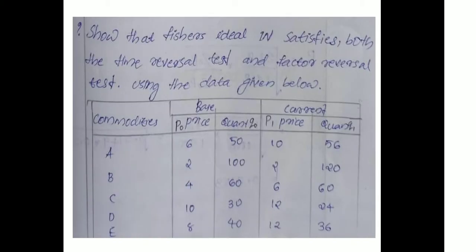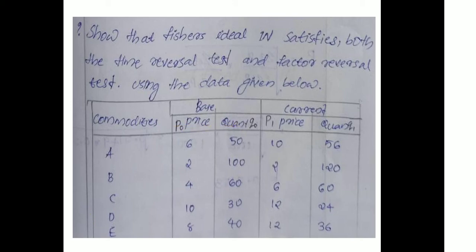The next question: Show that Fisher's ideal index number satisfies both the time reversal test and the factor reversal test using the given data. Fisher's ideal index number is the ideal index number — we will prove that both the time reversal and factor reversal tests are satisfied.